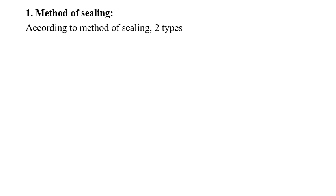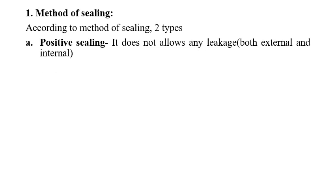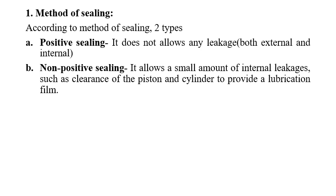First classification — method of sealing: according to the method of sealing there are two types: positive sealing and non-positive sealing. In case of positive sealing, these sealing elements do not allow any leakage, either internal or external. In case of non-positive sealing, these sealing elements allow a small amount of internal leakage — for example, the clearance between the piston and cylinder — to provide a movement lubrication film between them.